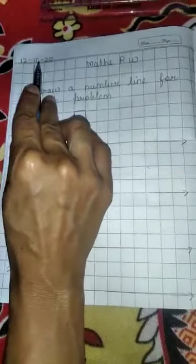So first you will write the date. 12-10-2020. Okay. Question number 1. Draw a number line for each problem. I explain you in the copy when we are doing the number line. Yes or no?